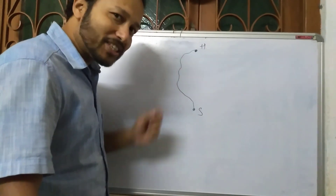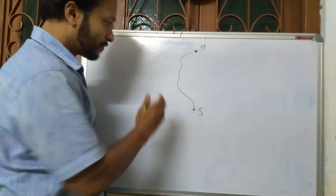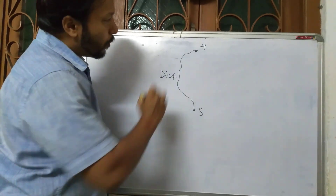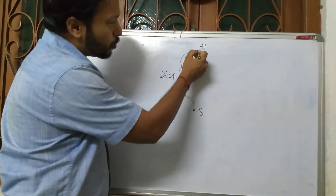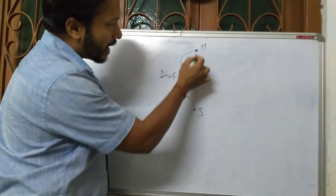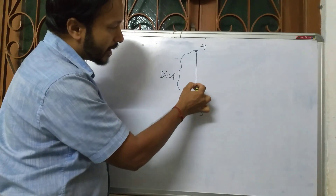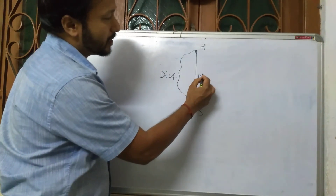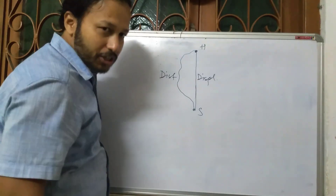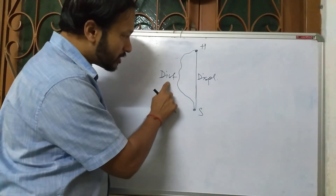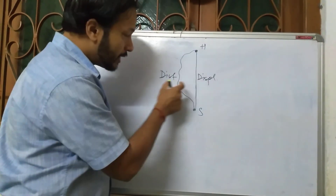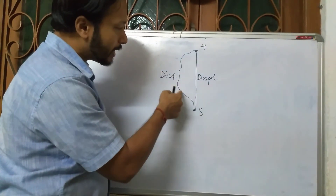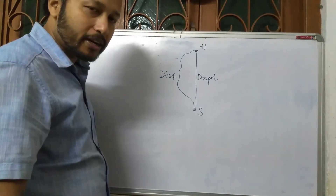We call that actual path the distance. And from home to school, the direct straight line is called displacement. So this is distance and this is displacement. Distance is the actual road or actual path by which we are traveling.